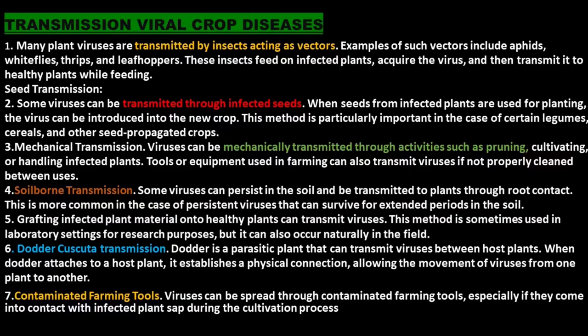Seed transmission is particularly important in the case of certain legumes, cereals, and other seed-propagated crops. Mechanical transmission occurs through activities such as pruning, cultivating, or handling infected plants. Tools or equipment used in farming can also transmit viruses if not properly cleaned between uses. Soilborne transmission is also possible — some viruses can persist in the soil and be transmitted to plants through root contact, which is more common with persistent viruses that can survive for extended periods in the soil.